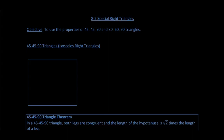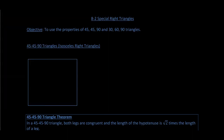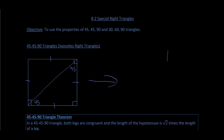The first type is 45-45-90 triangles, which are isosceles right triangles. If we take a square where all sides are congruent and draw a diagonal, we end up with a 90-degree angle and two 45-degree angles. This gives us an isosceles right triangle — a 45-45-90 triangle.